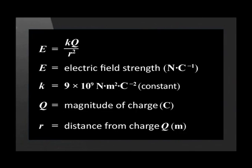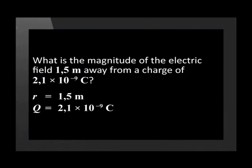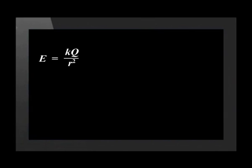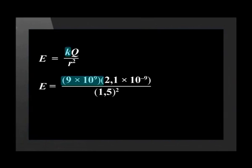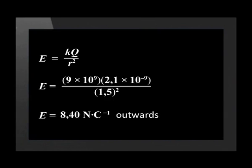Let us try an example using this equation. What is the magnitude of the electric field 1.5 meters away from a charge of 2.1 times 10 to the minus 9 coulombs? R is 1.5 meters and Q is 2.1 times 10 to the minus 9 coulombs. Substituting into E equals K Q over R squared, with K equal to 9 times 10 to the 9, Q equal to 2.1 times 10 to the minus 9, and R equal to 1.5, gives us an answer of 8.40 newtons per coulomb. This is a positive charge, so the direction of the electric field will be outwards.